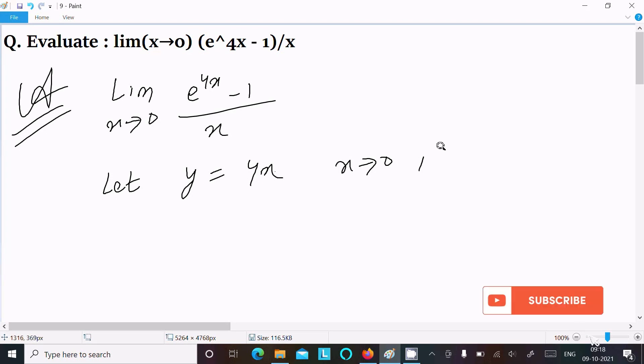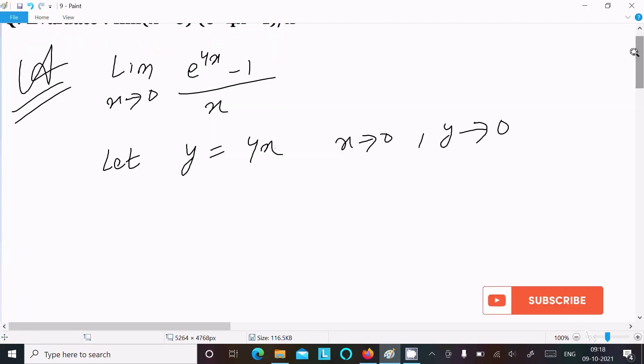So here, now limit x tends to 0, and there is e power 4x minus 1.